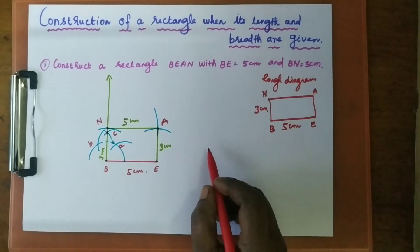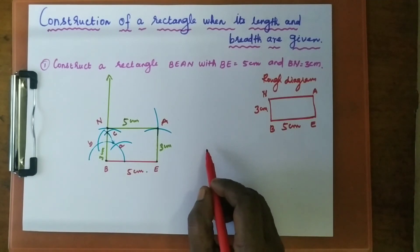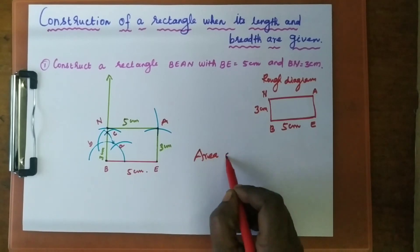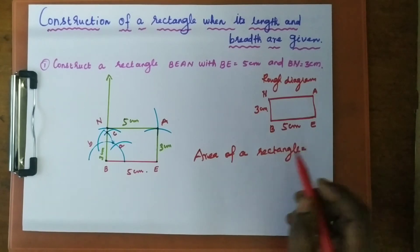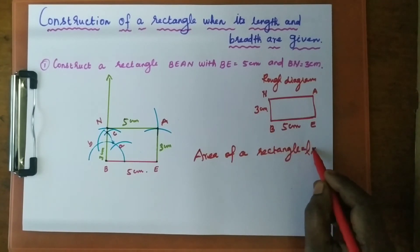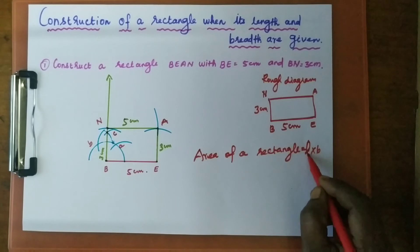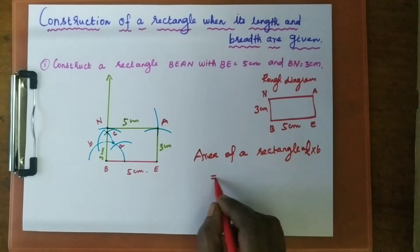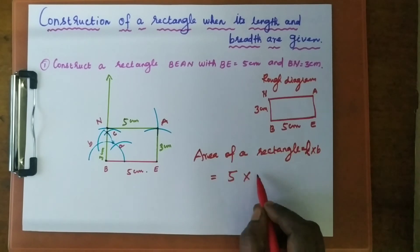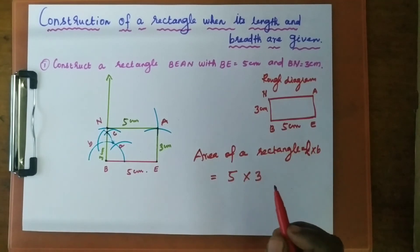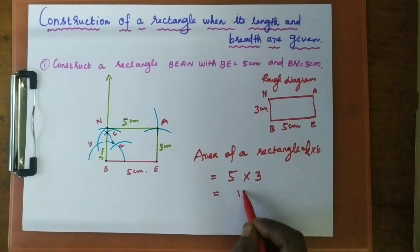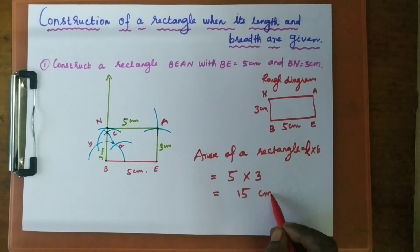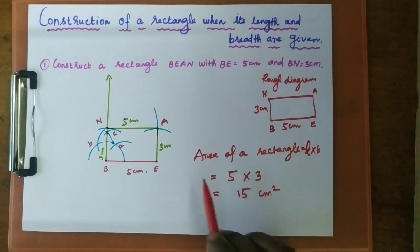Next we have to calculate the area of the rectangle. Area of a rectangle equals L into B. Here, length is equal to 5 centimeters and breadth is equal to 3 centimeters. So 5 times 3 equals 15 centimeters square. Therefore, the area of this rectangle is 15 centimeters square.